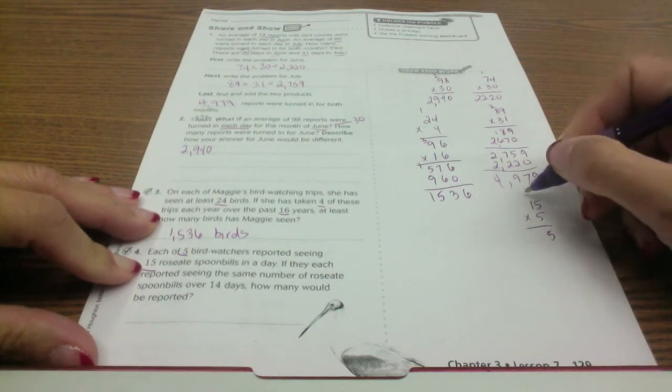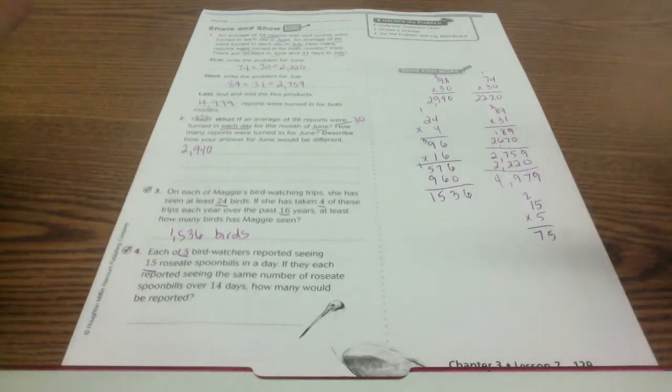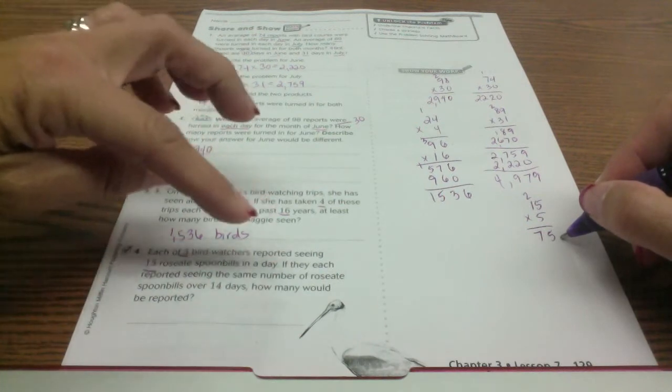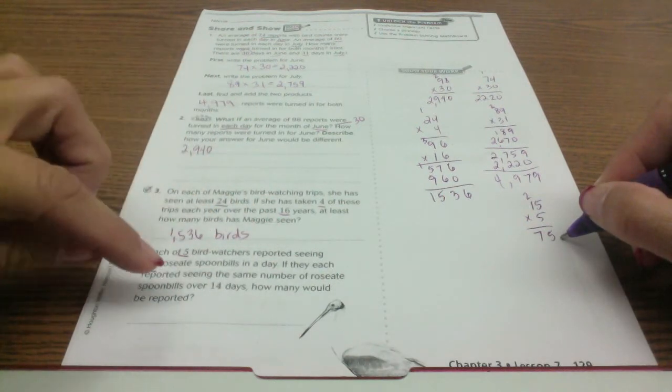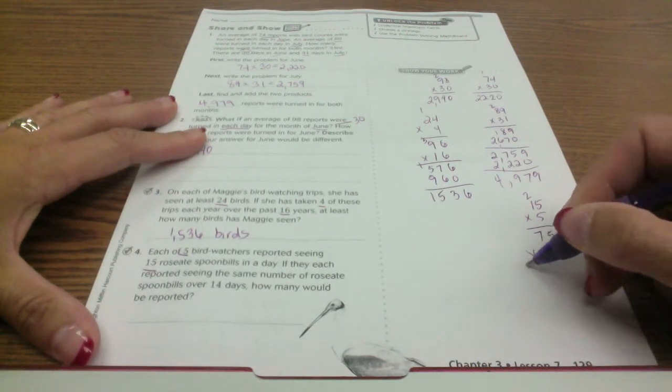5 times 5 is 25, 5 times 1 is 5 plus that is 75. So they're seeing a total, all five people are seeing a total of 75 birds per day. If they each report seeing the same number over 14 days, how many would be reported? So now I'm going to multiply this by 14.